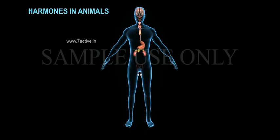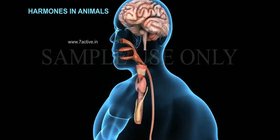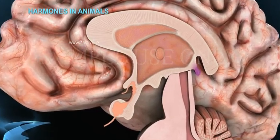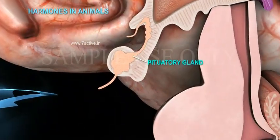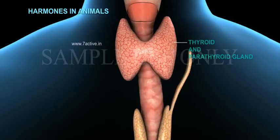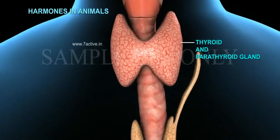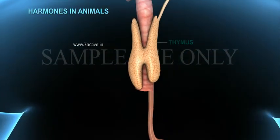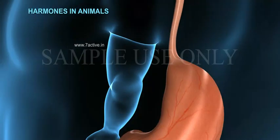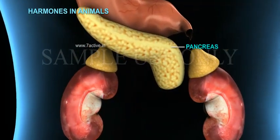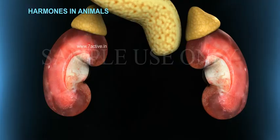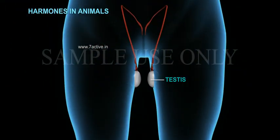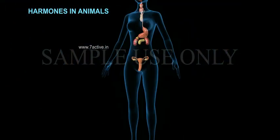There are 8 endocrine glands in the human body. They are: 1. Pineal gland, 2. Pituitary gland, 3. Thyroid and parathyroid gland, 4. Thymus, 5. Pancreas, 6. Adrenal gland, 7. Testes, and 8. Ovaries.